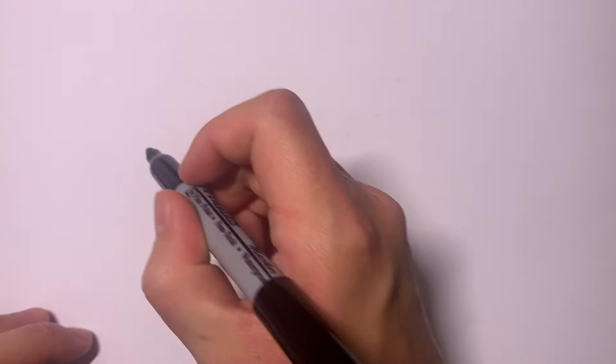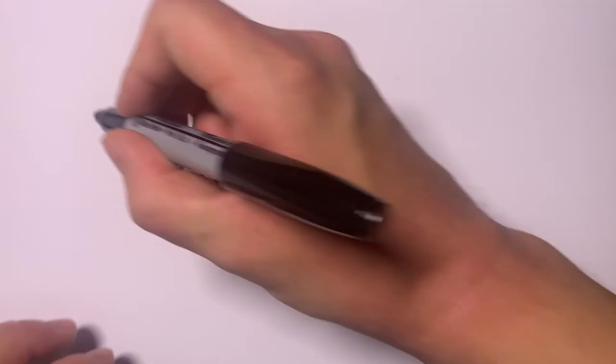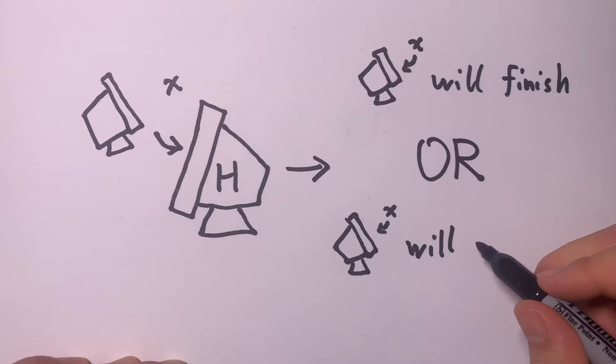Let's do a proof by contradiction. Suppose there were a program H that can tell you whether any program will halt on some input. Keep in mind that H gives you the answer within a finite amount of time. It always halts itself.